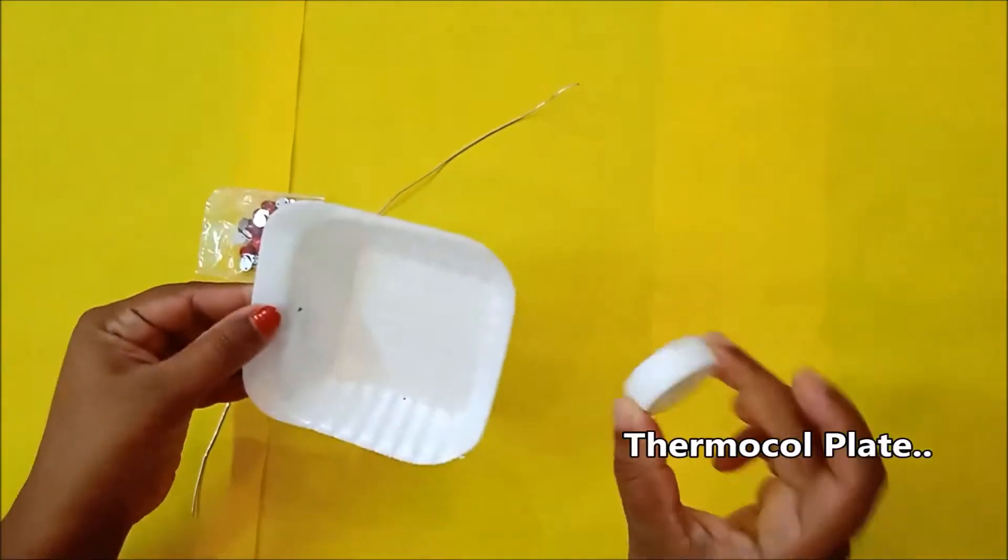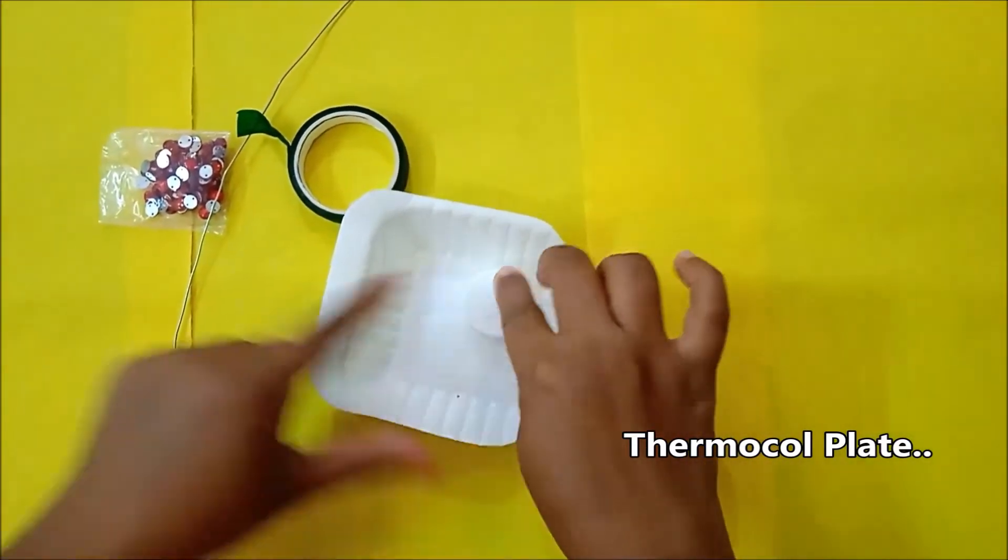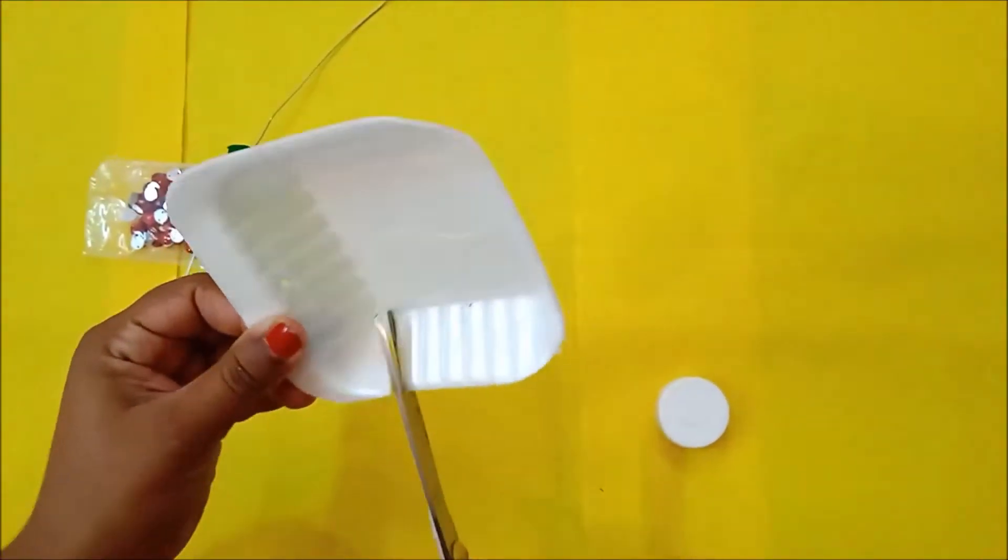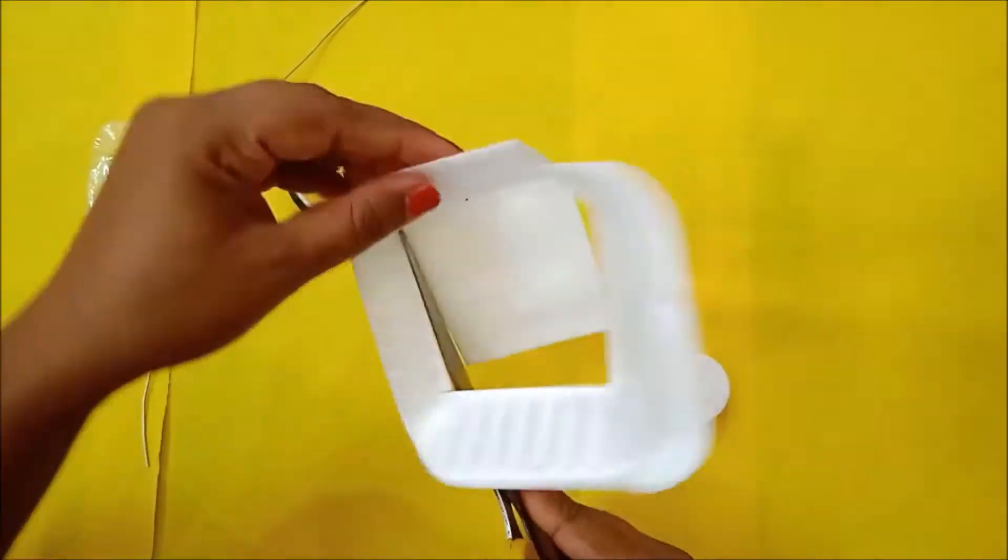To get a perfect circle, I have taken a cap of an acrylic paint bottle. Keep the bottle cap on the paper plate, press it well, and using your scissors cut through the lines.